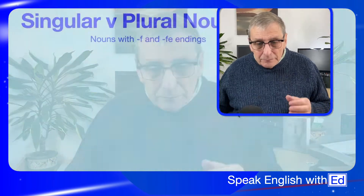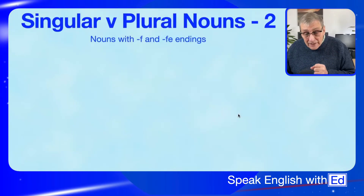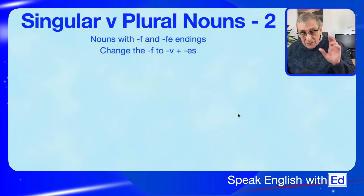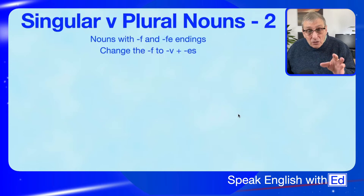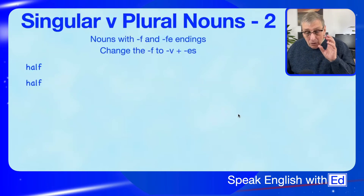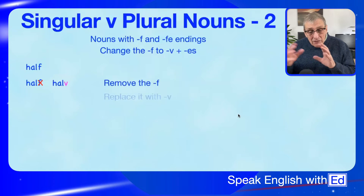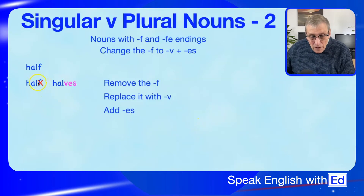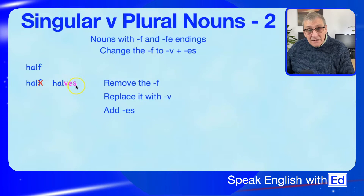Let's start looking at endings with F and FE. For nouns that end with F or FE, we're going to have to change the F to a V and then add ES. So here's the word 'half' — it complies with the rule because it ends in F. What we do is remove the F, replace it with a V, and then add ES. That is the rule.